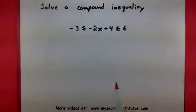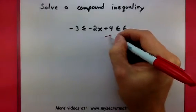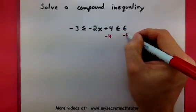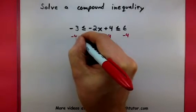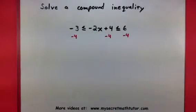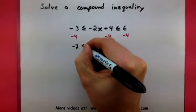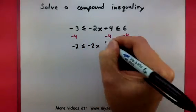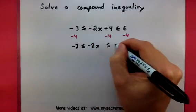Our goal is to get x all alone. So we start by subtracting a four from every single one of these pieces. This will give us a -7 ≤ -2x ≤ 2.